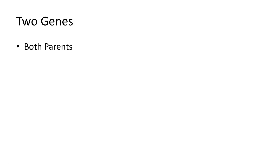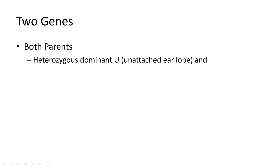We're going to look at another two-gene Punnett Square. In this case, both parents are homozygous for the dominant U, which stands for unattached earlobes.